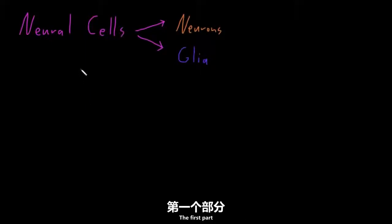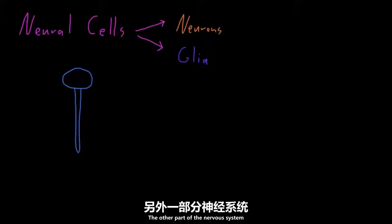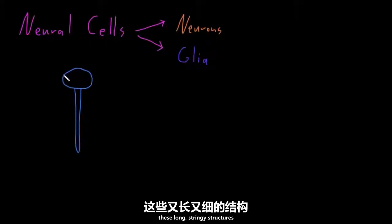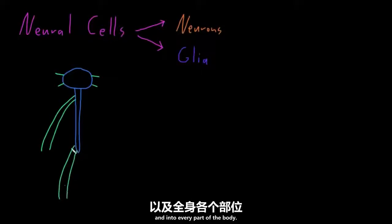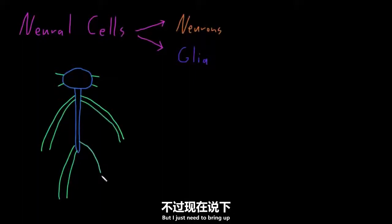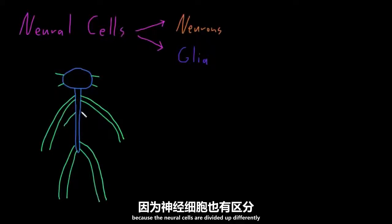The structure of the nervous system is divided into two main parts. The first is mainly made up of the brain and the spinal cord, called the central nervous system. The other part is called the peripheral nervous system, made up mostly of nerves — long stringy structures that come out of the brain and spinal cord and go into the arms, legs, and every part of the body. The neural cells are divided up differently amongst these two systems.